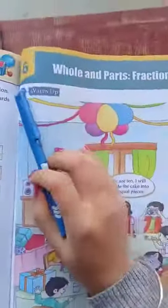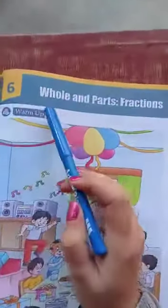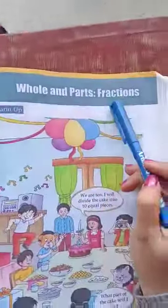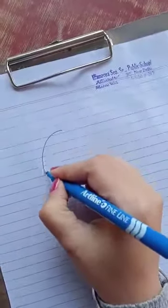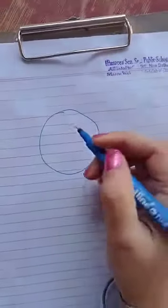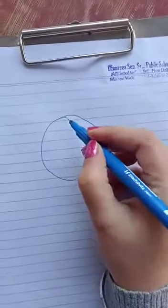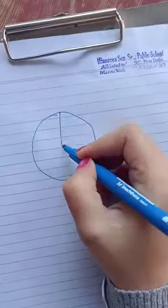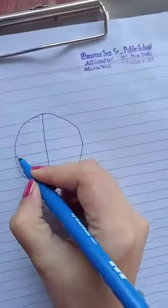Hello students, today we are going to do a new chapter, chapter number 6 of maths: whole and part fractions. First, we will read about what is a fraction. Suppose you bring a pizza from a school market and you have to divide it equally into four parts. You will cut it into equal slices.